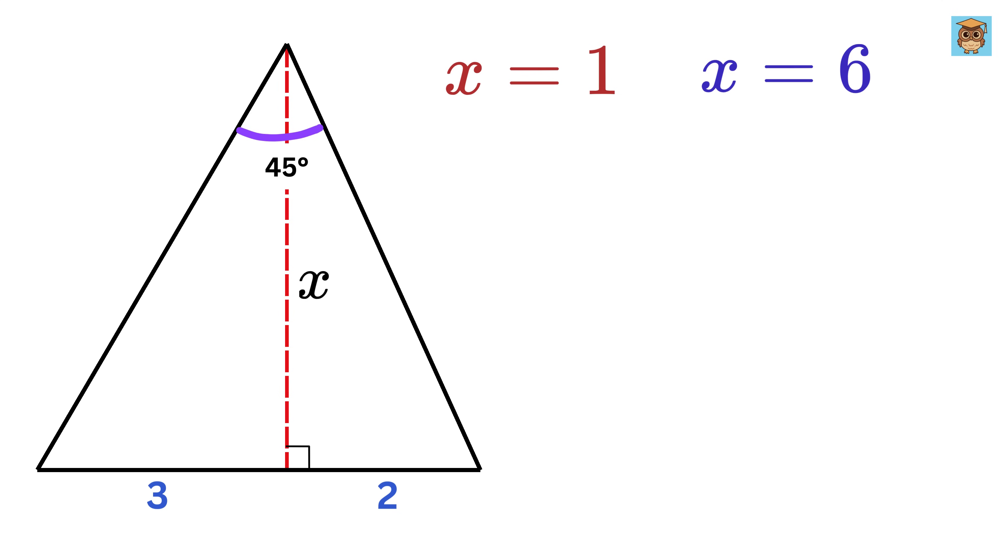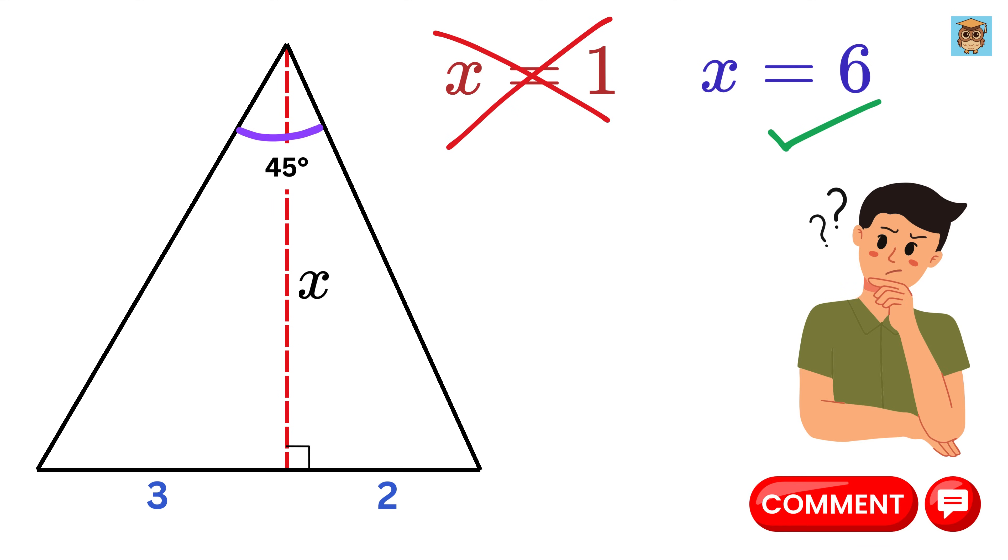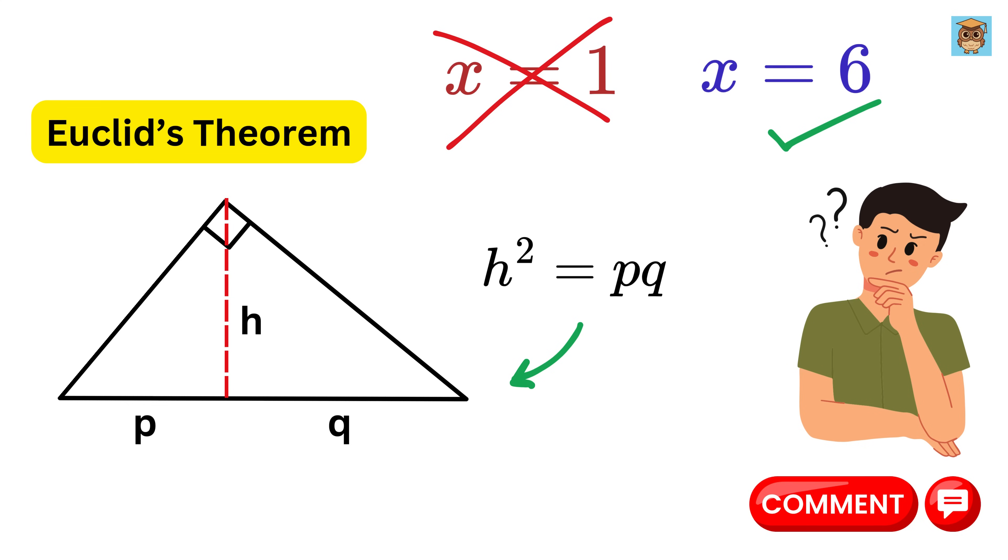But out of these two values, x equals 6 is the correct answer and we have to reject x equals 1. Can you let me know why in the comments? Hint is to use Euclid's theorem which is this.